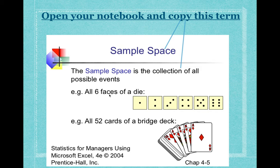So when you roll a dice you can roll any of these combinations: one, two, three, four, five, six. This is the sample space for rolling a dice, and this is the sample space for cards. Please pause this lesson if you need more time, open your notebook, and write down 'sample space' and what it means. You can also write an example. You need to know this — I will possibly ask you later, and if you write this into your notebook you will be able to use it for your test.